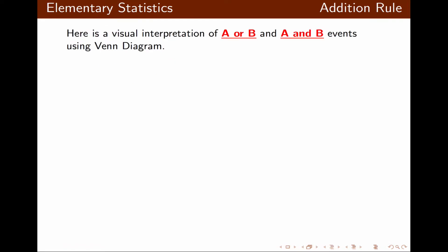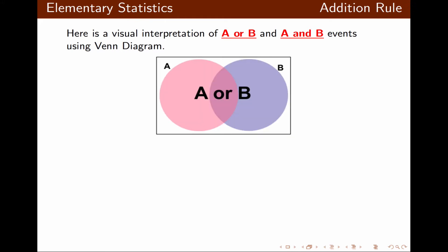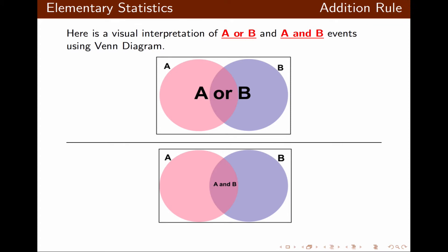Now let's look at the visual interpretation of A or B and A and B events using Venn Diagram. The A or B event simply implies whatever is inside of A or B or both. But A and B implies only the overlap of A and B — it involves only the elements or outcomes that belong to A and B at the same time.